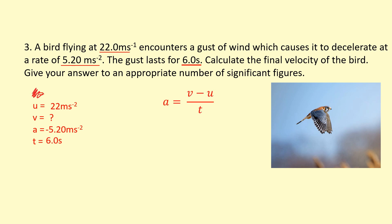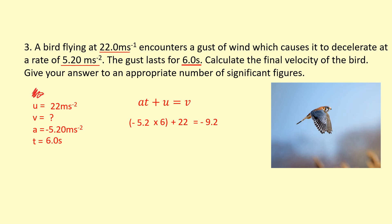The relevant SUVAT equation is a = (v − u) / t. Rearranging to make v the subject: v = u + at. Substituting: v = 22 + (−5.2 × 6) = 22 − 31.2 = −9.2 m/s. The negative sign means the bird is now traveling in the opposite direction — it has been blown backwards by the gust of wind.